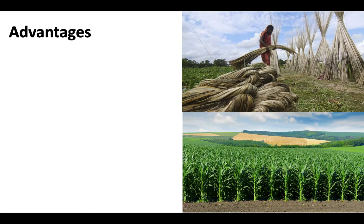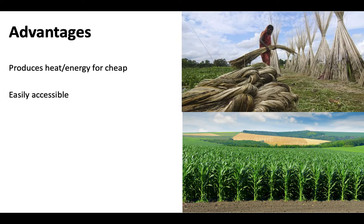The advantages of using biomass are many. First of all, it's pretty cheap and you're producing not only energy but also heat. You can heat your home and produce energy to cook food at the same time, and it doesn't cost very much. It's very easy to access and doesn't really require any refining — you can just chop down a tree and start burning. It grows back pretty quickly compared to fossil fuels, replenishing at a much faster rate. You can grow a bunch of hay in one growing season; trees take a little bit longer, of course.